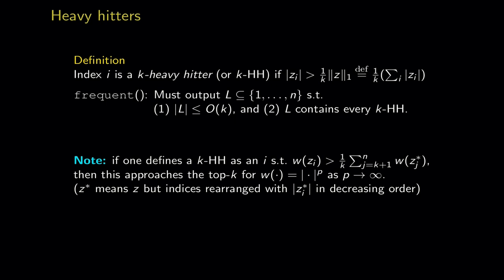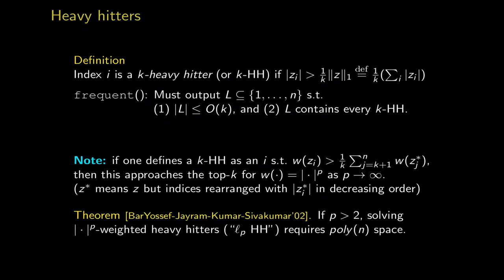This theorem tells us the closest approximation of actual top-k we could hope to solve in very low memory is the squared (L2) version, where z_i^2 > (1/k) times the sum of squares. That's why I'll focus on the L2 heavy hitters algorithm — it's the closest version of top-k solvable in low memory. This lower bound holds even for Monte Carlo randomized algorithms that succeed with only two-thirds probability.